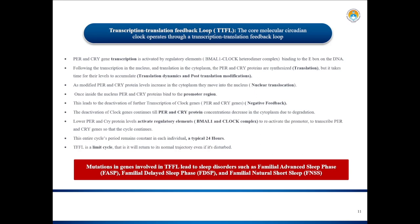Once the level of period and cryptochrome proteins drops, they lose their control on the E-box. This allows the regulatory elements BMAL1 and CLOCK to rebind to the promoter and reactivate it, so transcription of period and cryptochrome genes continues again. This entire cycle remains constant in each individual with a typical 24-hour period. The accumulation of period and cryptochrome proteins is associated with the light cycle, while their degradation and negative feedback is associated with the dark cycle. The transcription-translation feedback loop is a limit cycle — it returns to its normal trajectory even if disturbed.